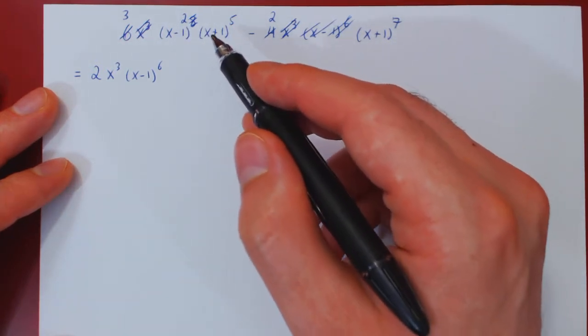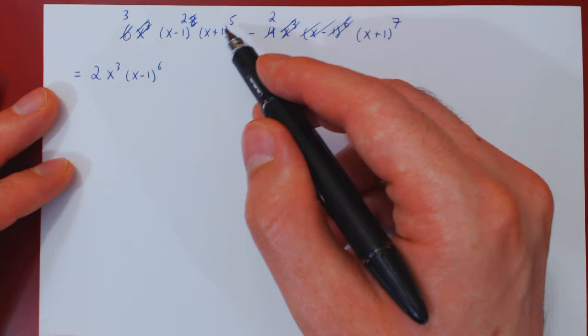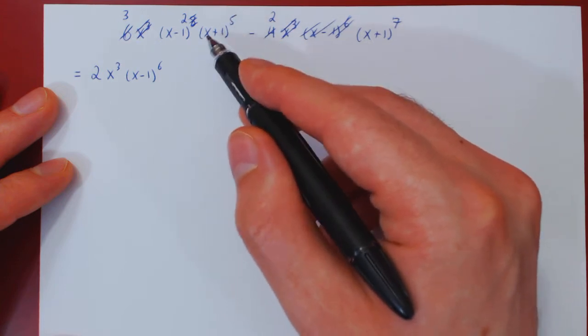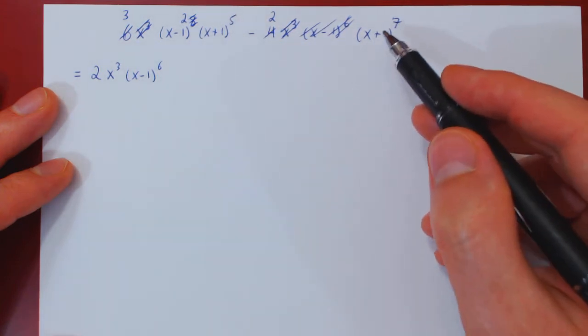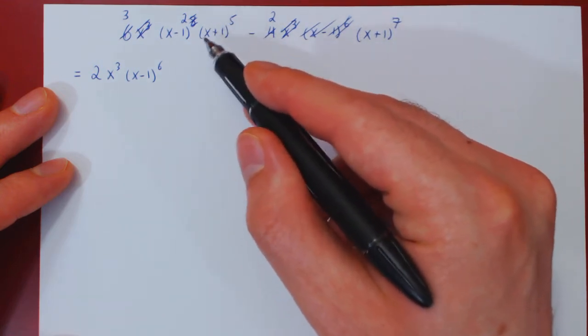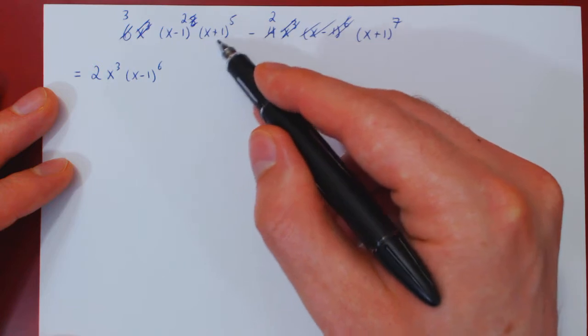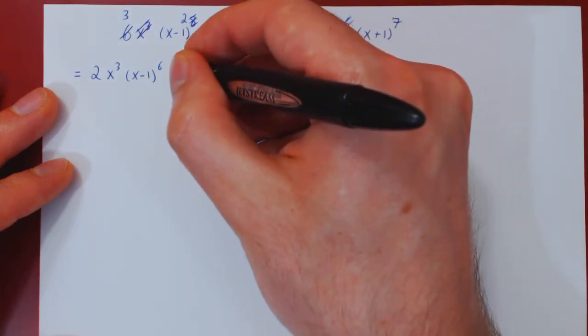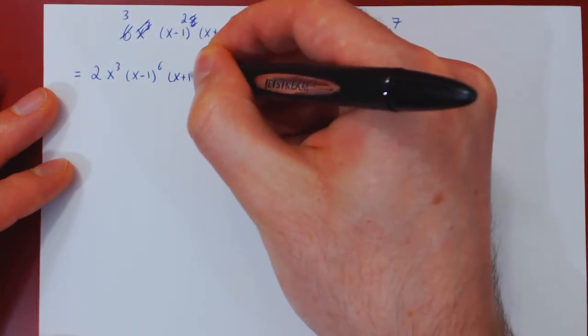What else? Well, there's also a factor of x plus 1. This factor appears 5 times in the first term, 7 times in the second term. So the best we can do is factor 5 times the factor x plus 1. So this is x plus 1 to the 5.